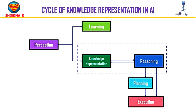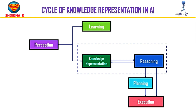First, the perception component retrieves data or information from the environment. With the help of this component, you can retrieve data from the environment, find out sources of noise, and check if the AI was damaged by anything. It also defines how to respond when any sense has been detected.